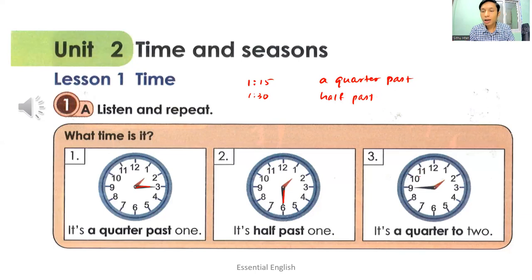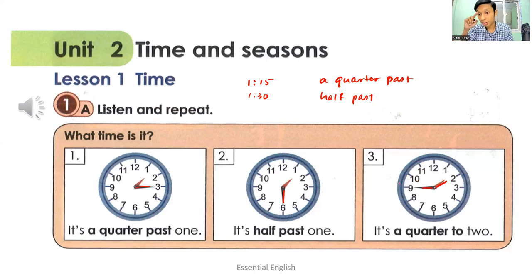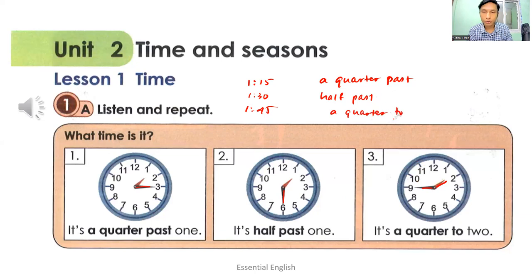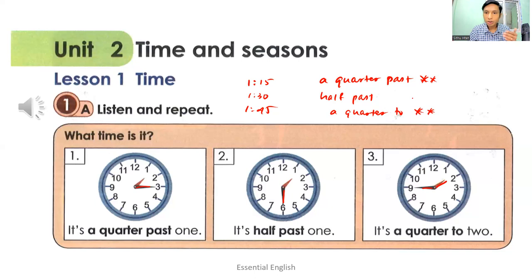Please look at the last picture. You can see the hour hand pointing to two, and the minute hand is also visible. So it's a quarter to two. You must remember the use of 'a quarter past' and 'a quarter to'. Please compare the two expressions: 'a quarter past' and 'a quarter to'.